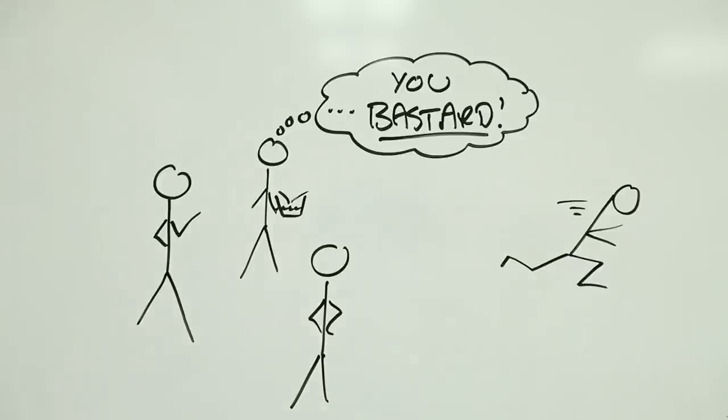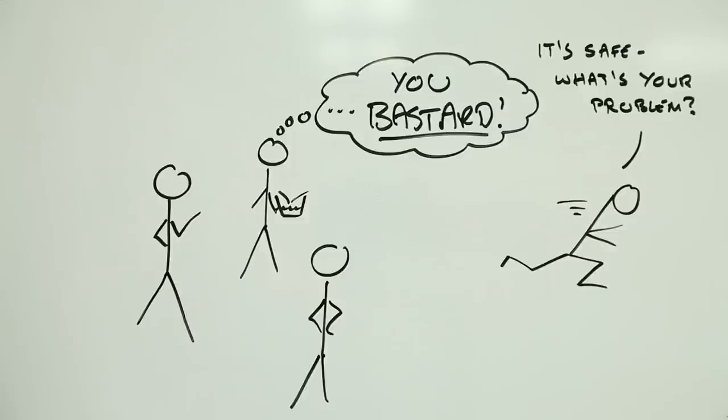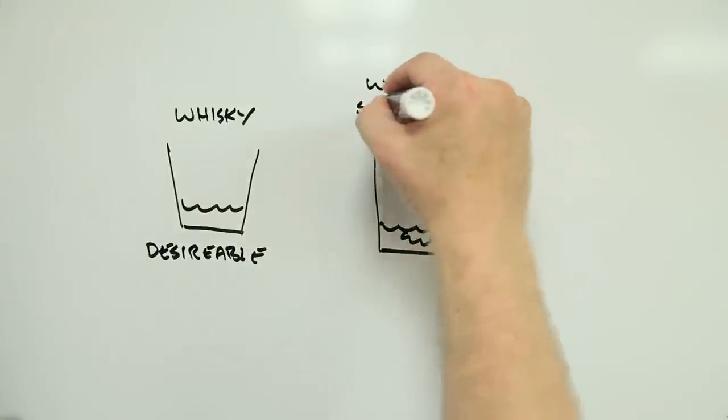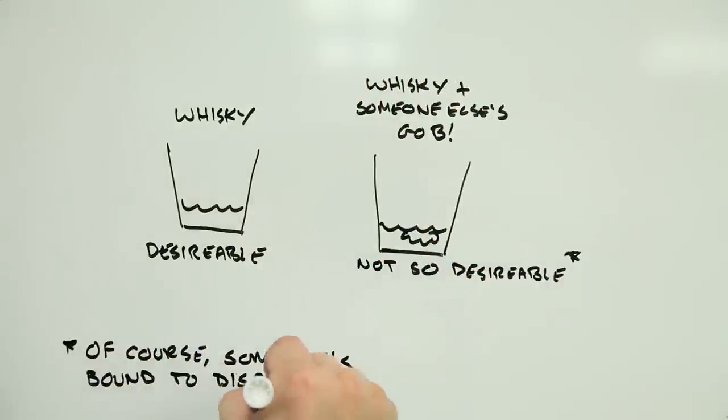Even though the chances are that the alcohol in the whiskey would kill off anything dangerous in the spit, my guess is you'd go for option C. The primary problem here is not whether your drink is safe or dangerous after being gobbed in. It's the violation of something that's important to you.